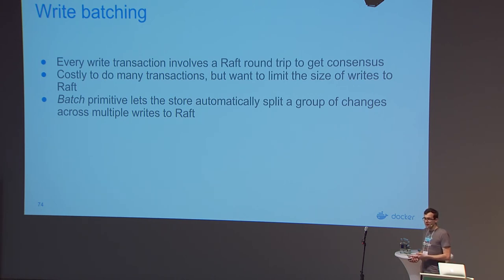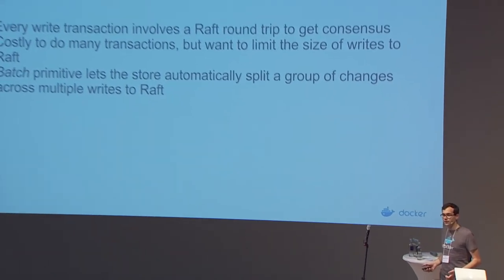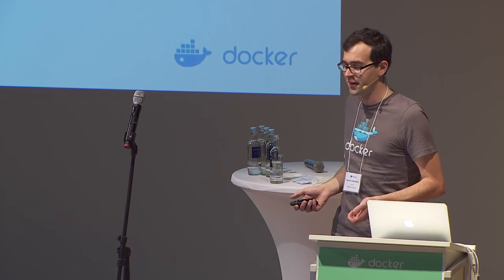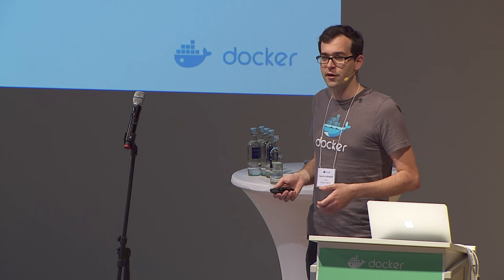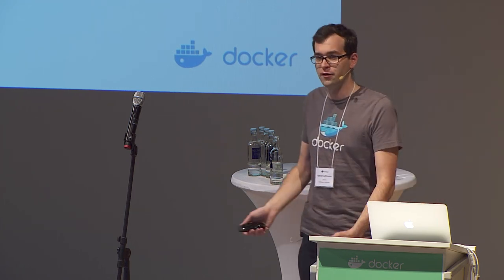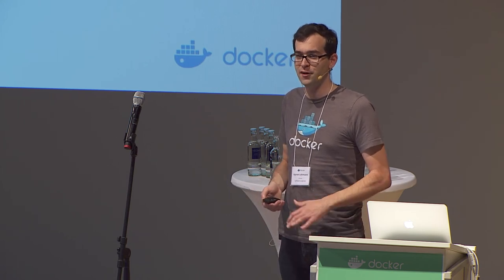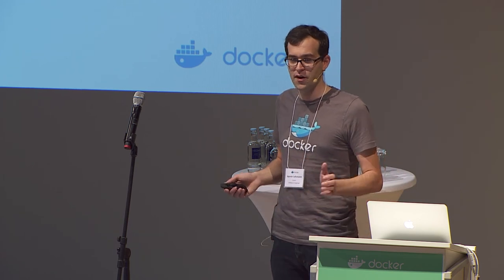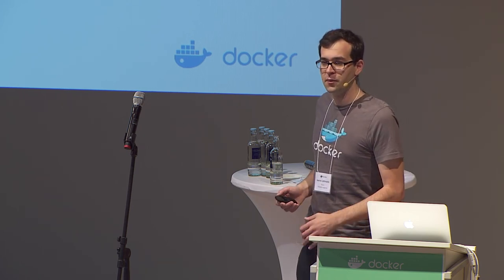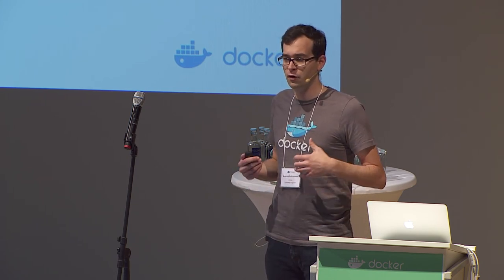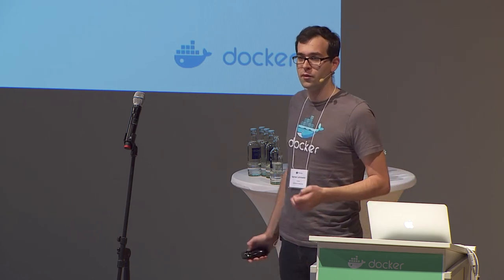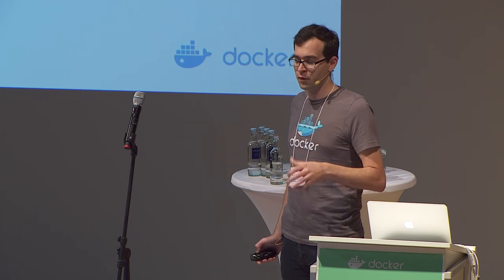We also have write batching. Every time we make a write to Raft, we have to get consensus from all other nodes — which involves network latency and writing to disk. If we're iterating over services and making changes, we don't want individual Raft writes for each one. But we also don't want to throw it all into one huge transaction. The batch parameter lets the store figure out what makes sense as a unit of size for sending updates.